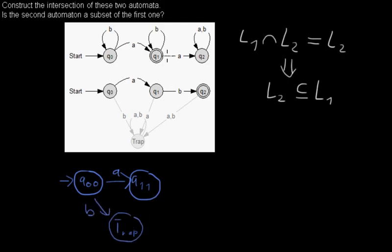So then in q1,q1, with an A we go to a trap state and with a B we come to q1,q1, which will be a final state because both of the states are final states.